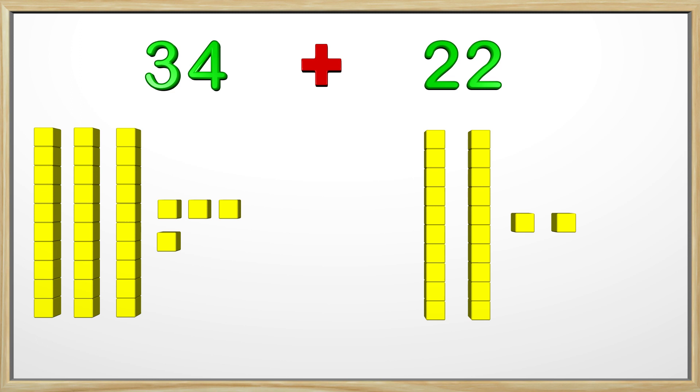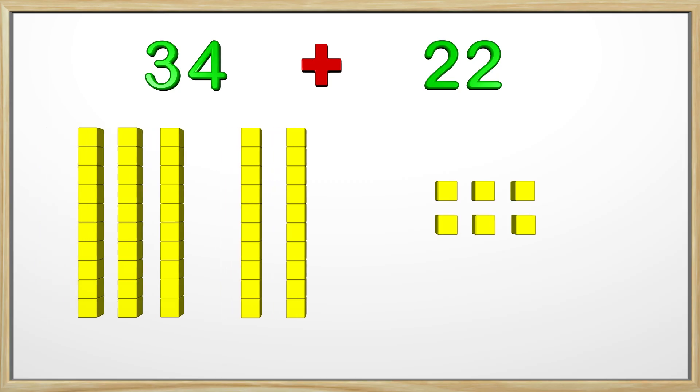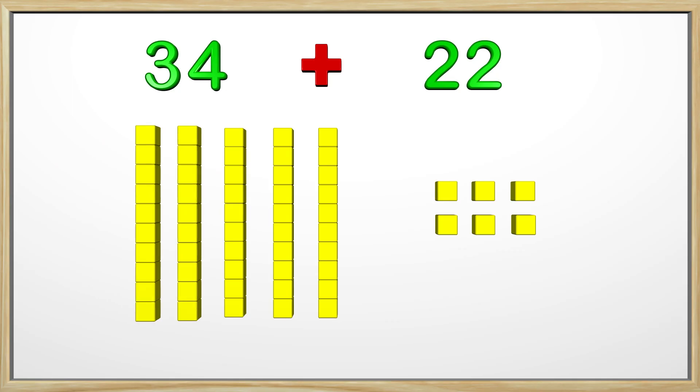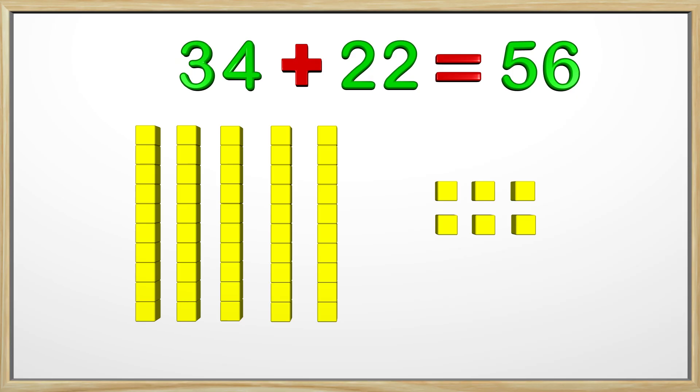We start by combining the ones blocks. We count by ones and get 1, 2, 3, 4, 5, 6. Now we count the tens blocks. 10, 20, 30, 40, 50. The answer is 56. We have 56 blocks. Great job guys!